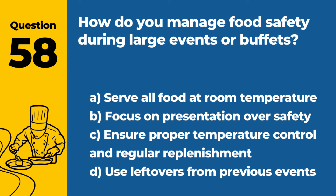Question 58. How do you manage food safety during large events or buffets? a. Serve all food at room temperature. b. Focus on presentation over safety. c. Ensure proper temperature control and regular replenishment. d. Use leftovers from previous events. Answer c. Ensure proper temperature control and regular replenishment. During large events or buffets, food safety is managed by ensuring proper temperature control for hot and cold foods, and regular replenishment to prevent food from sitting out too long.